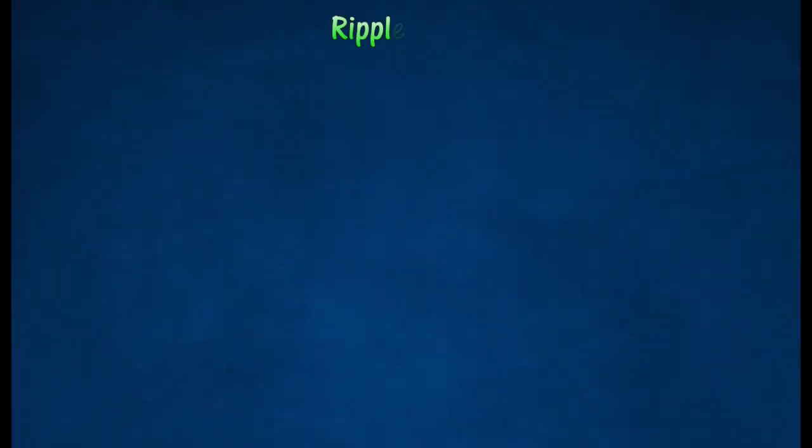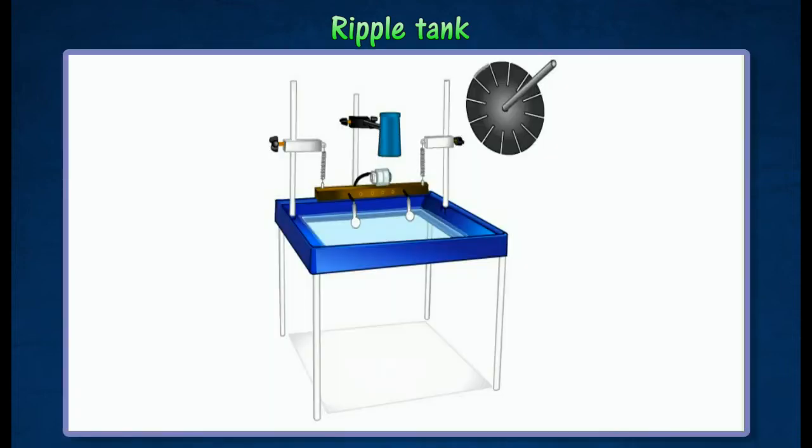Ripple Tank. A ripple tank is an apparatus that can be used to generate water waves for the purpose of studying the phenomena of waves. The diagram shows the main parts of a ripple tank.